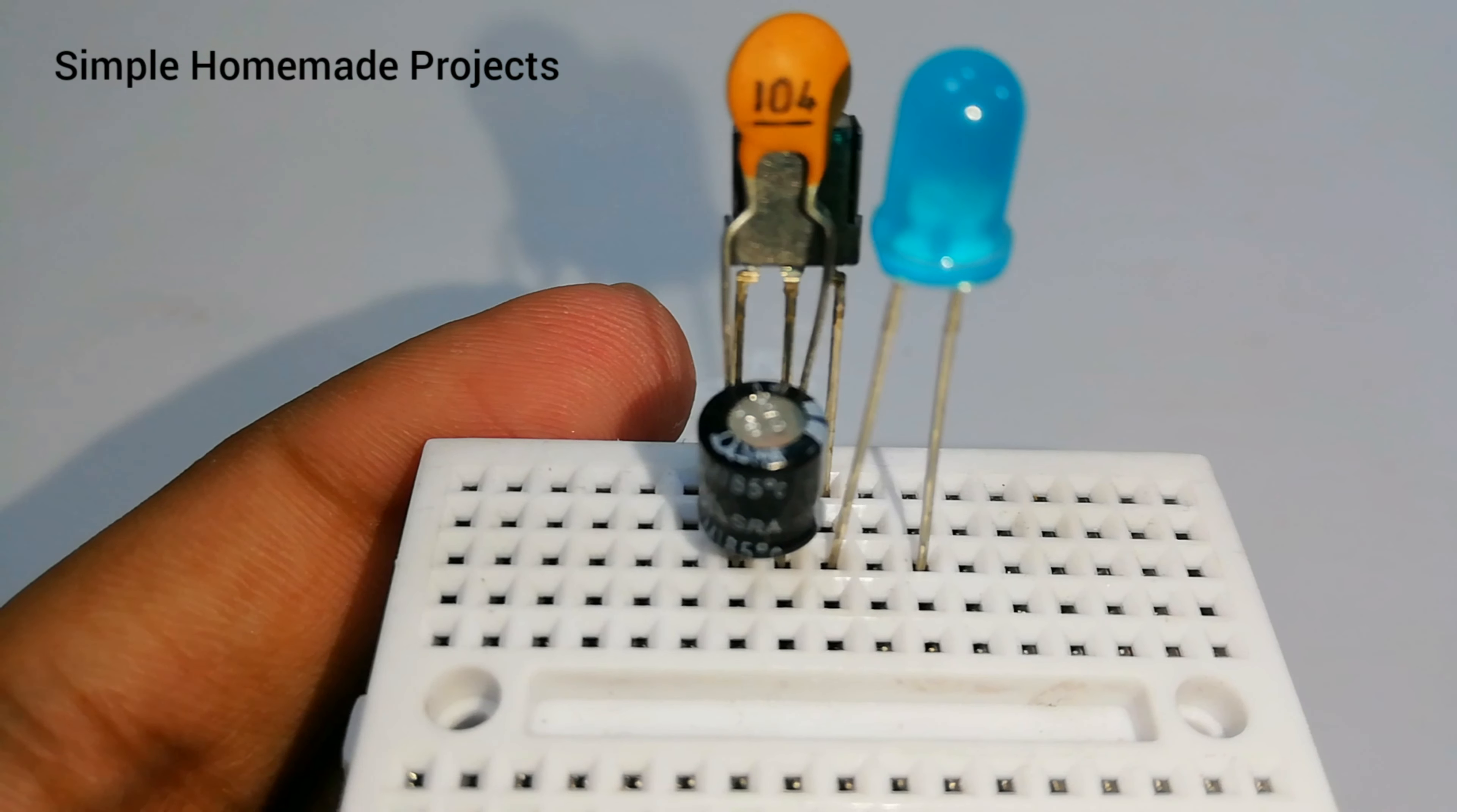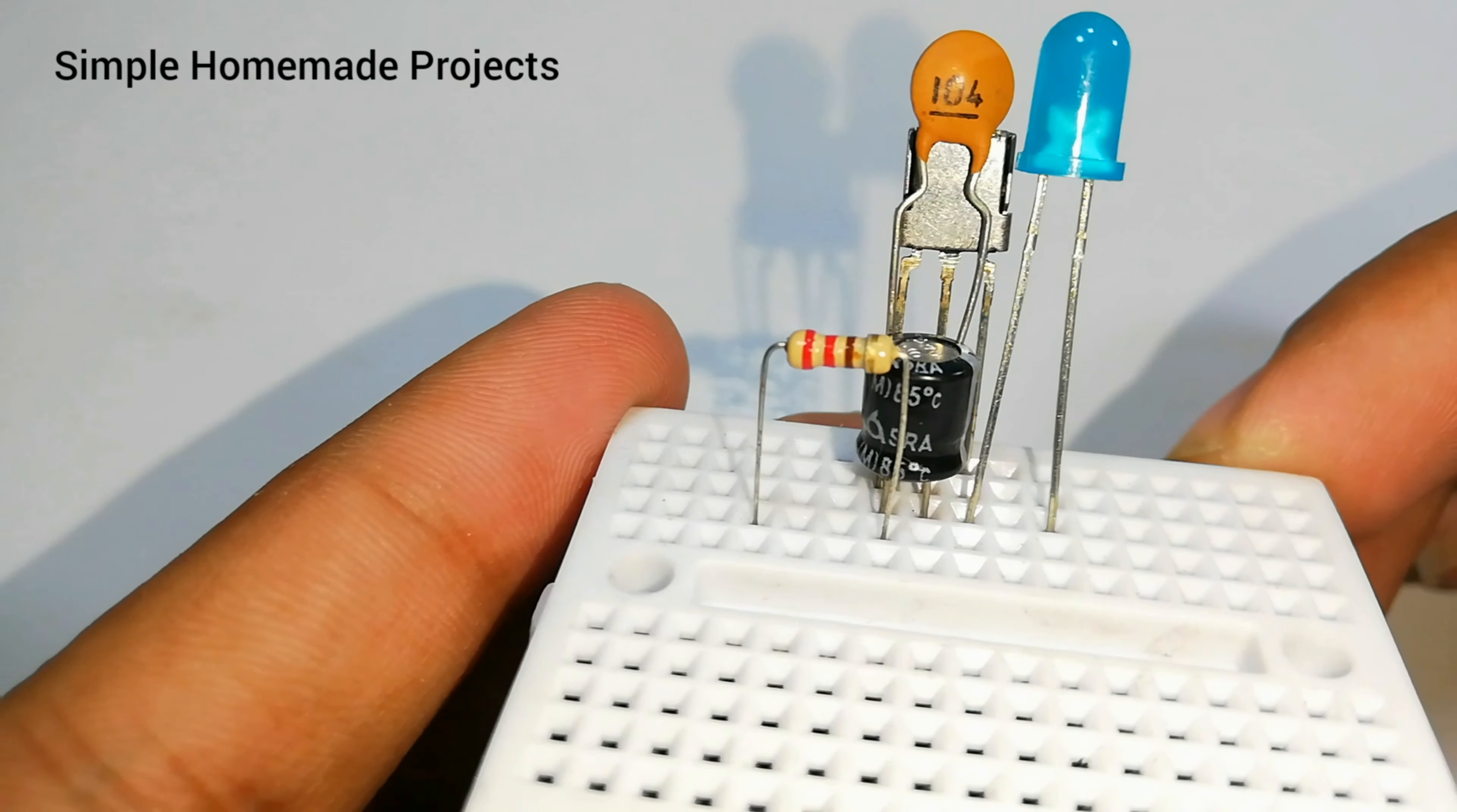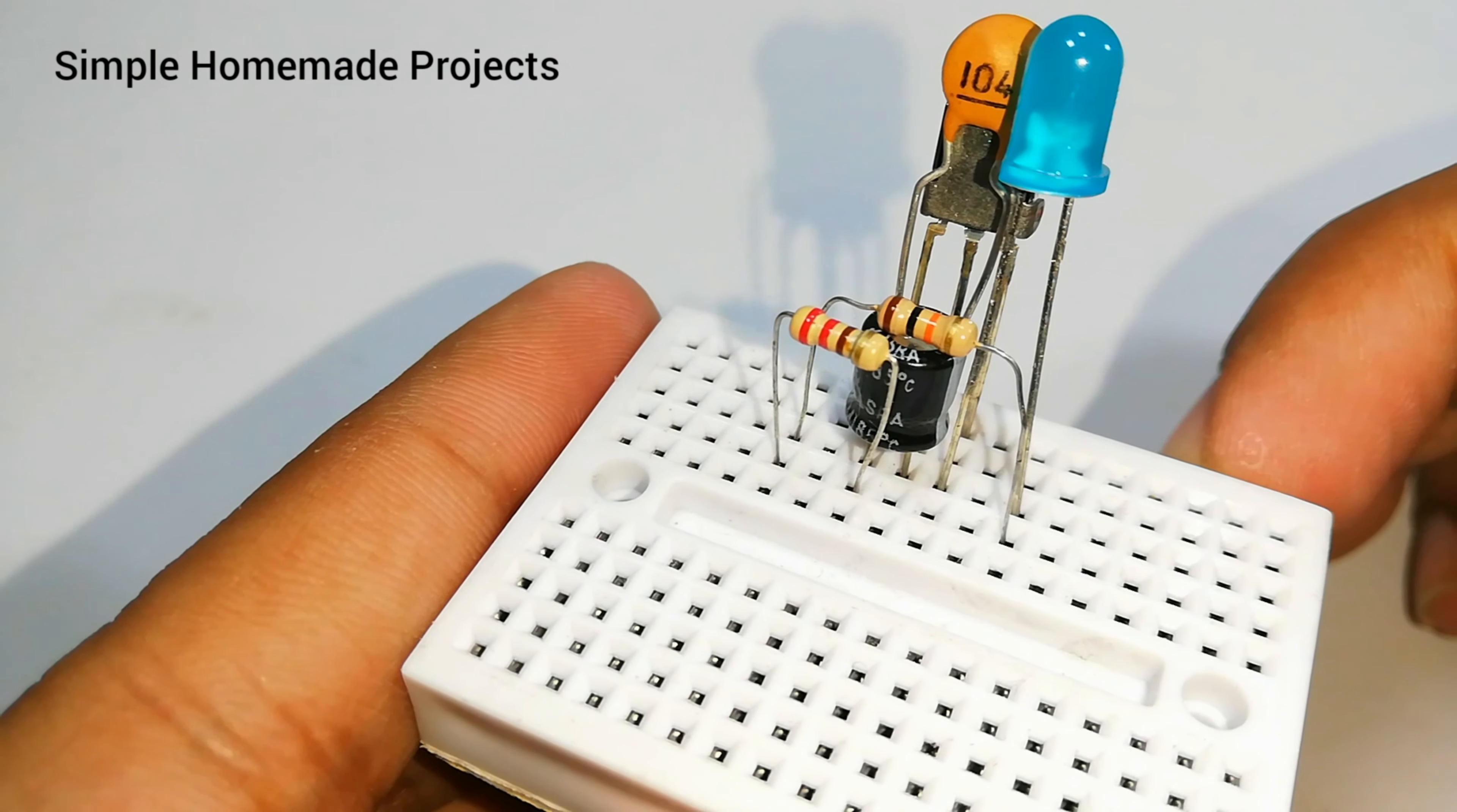Place the 220 ohms resistor between left pin of the receiver and a free rail. Now place the 10 kilo ohm resistor between positive terminal of LED and free end of 220 ohms resistor.